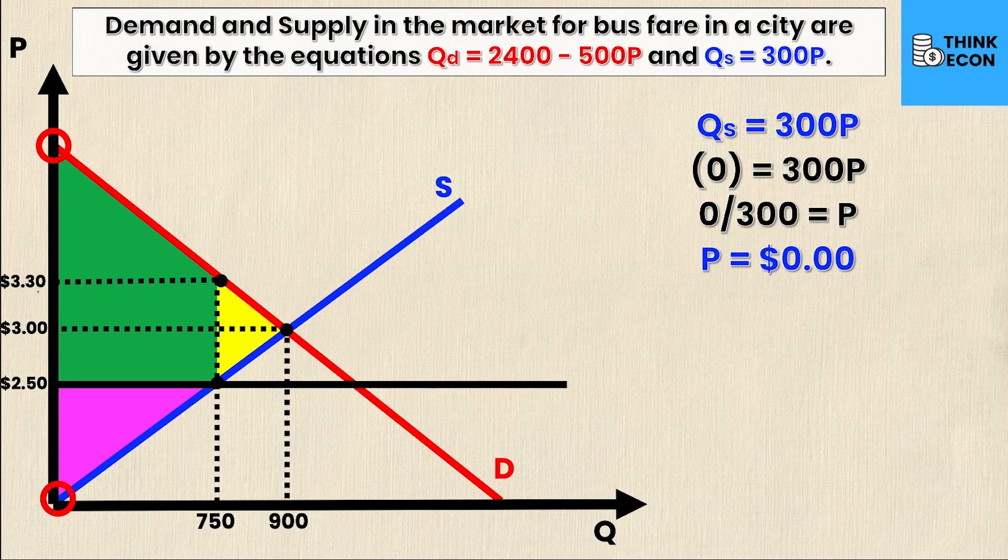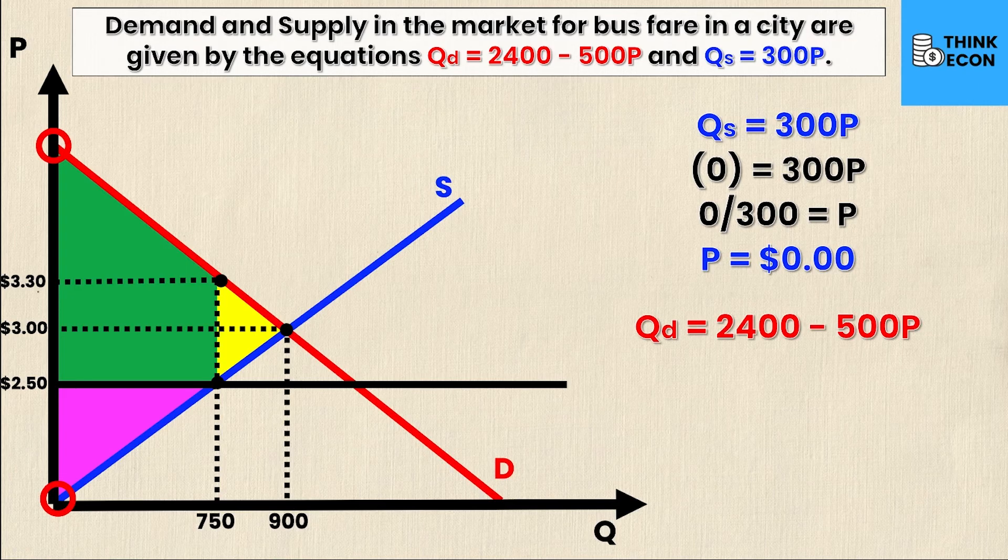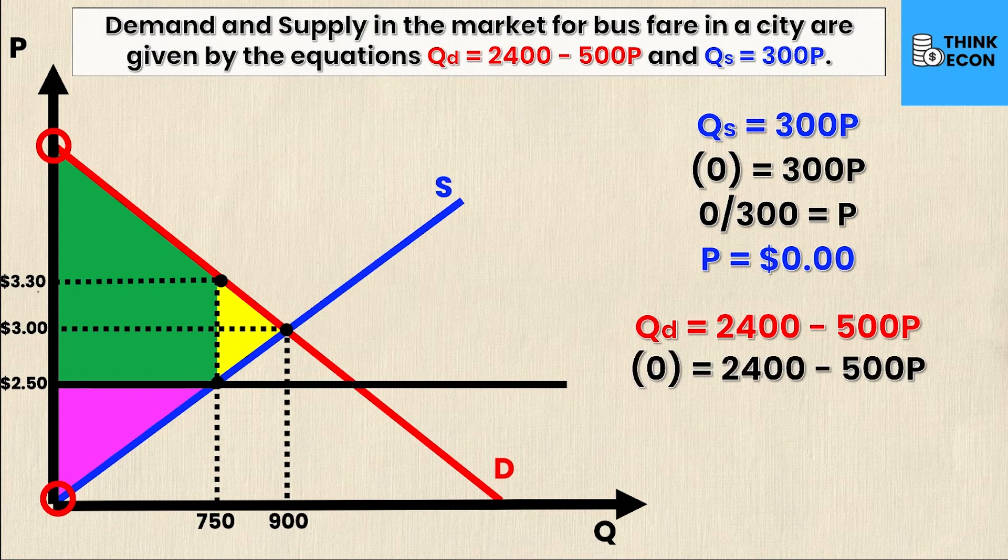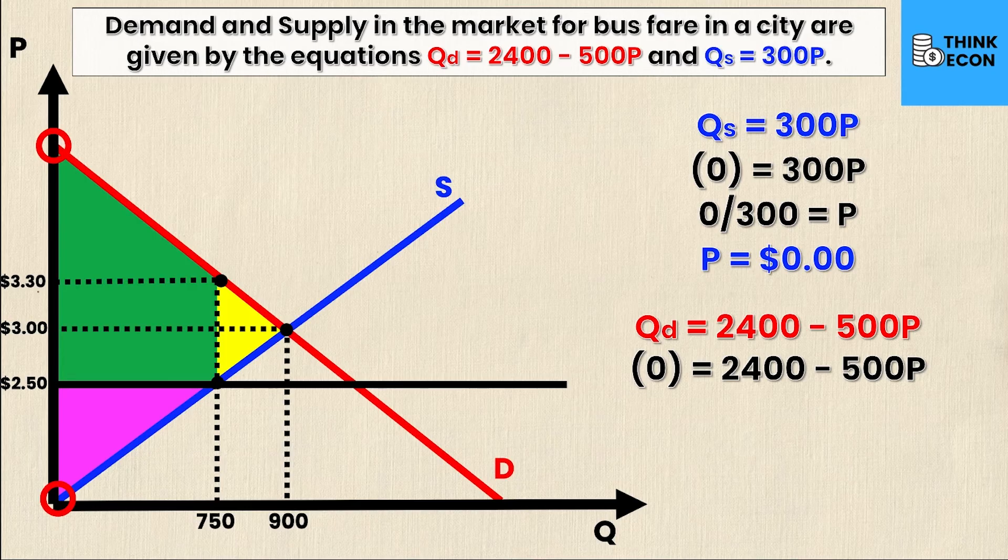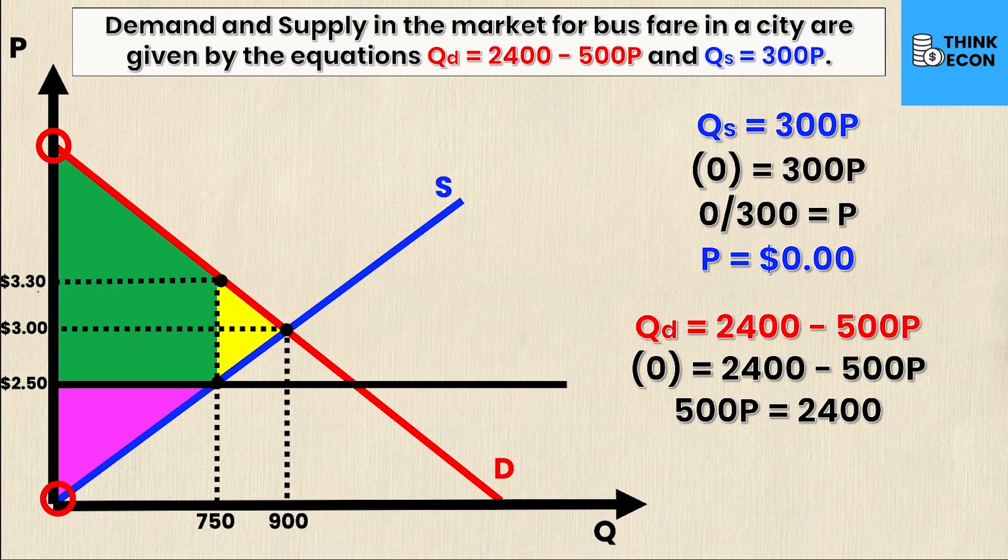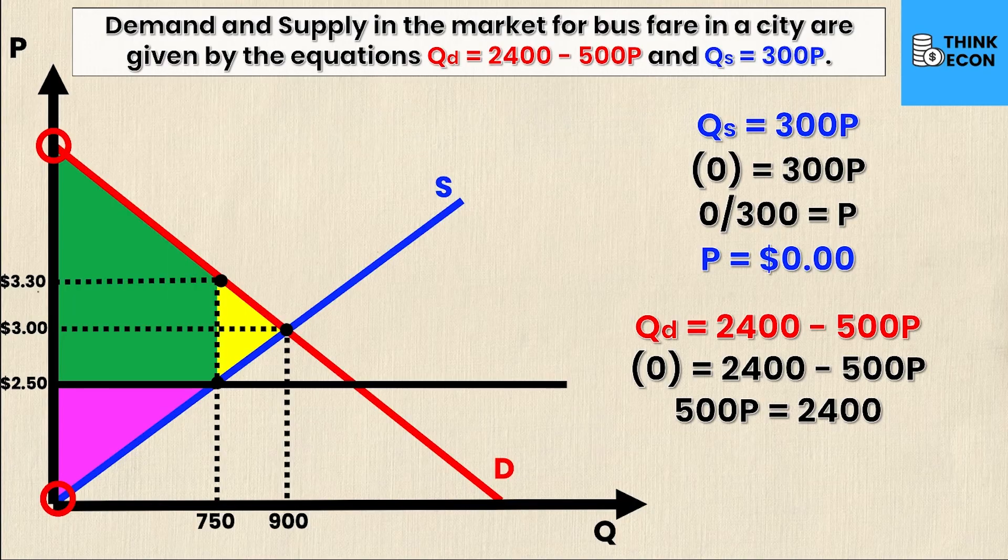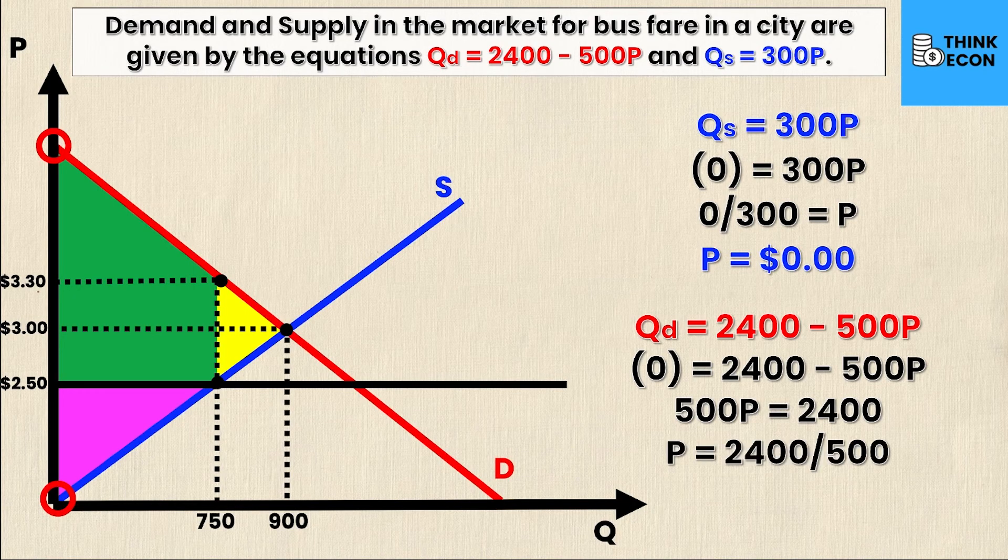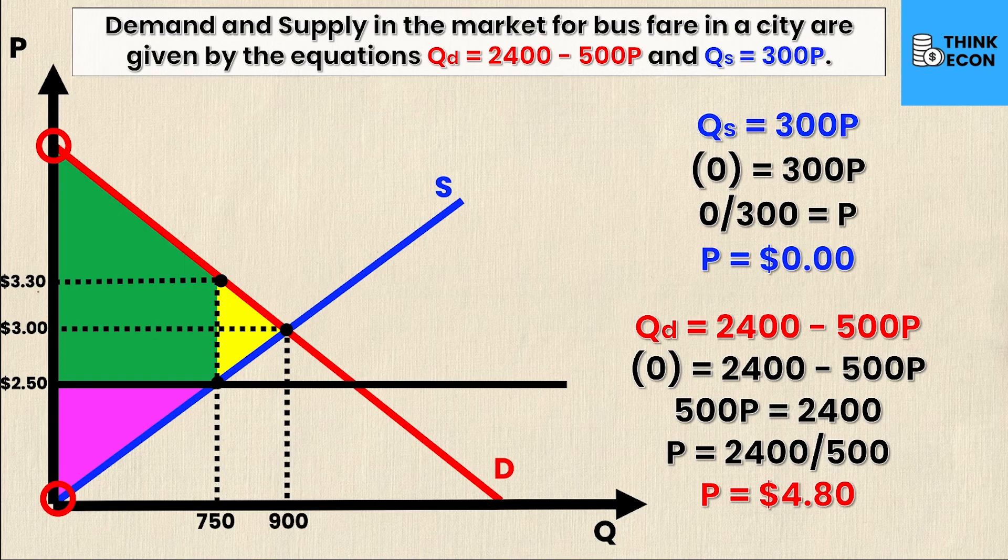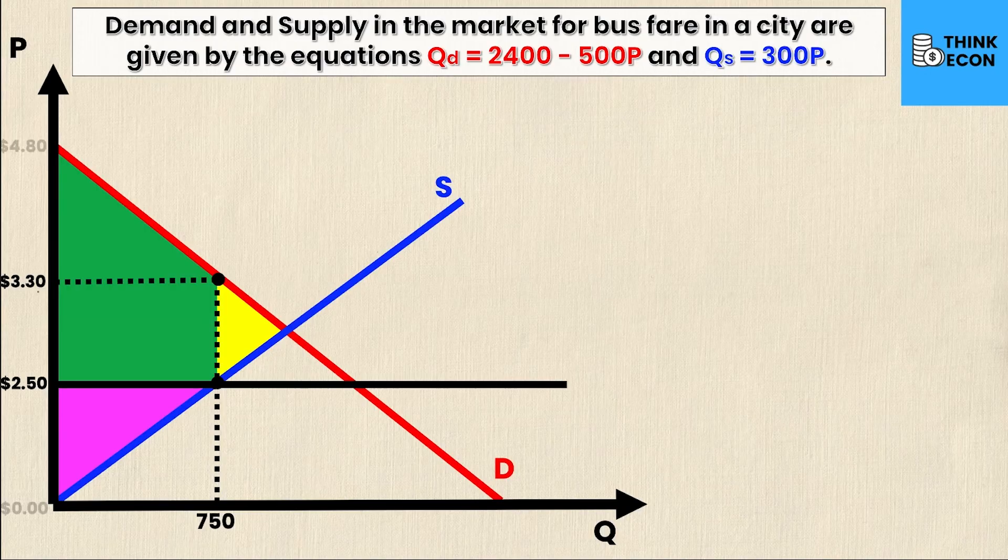Now let's do the same thing for the demand curve. Qd = 2400 - 500P. I'm going to substitute in zero for Q and solve for P. So zero = 2400 - 500P. Rearranging I get 500P = 2400, and then dividing both sides by 500 I get P = 2400 divided by 500, which yields P = $4.80. Now I can take these values and substitute them onto my graph.